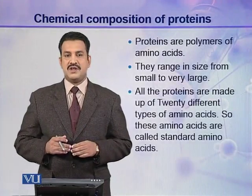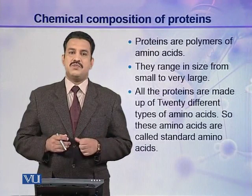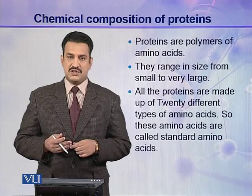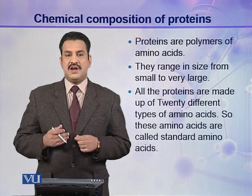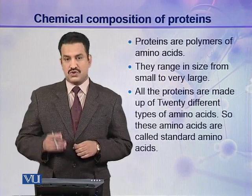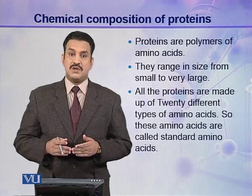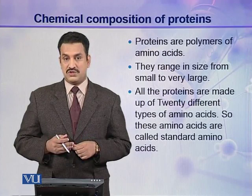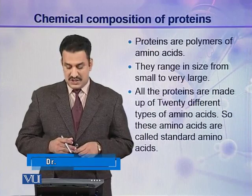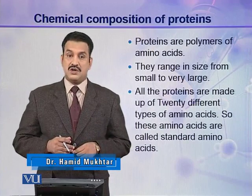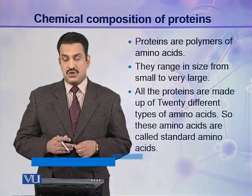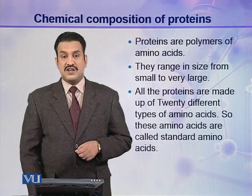Proteins, like DNA, are polymeric compounds made up of amino acids. In a protein molecule, amino acids are the repeating units — different amino acids join together to make protein molecules. Proteins range in size from small to very large; some may contain up to thousands of amino acids. All proteins are made up of 20 different amino acids, so these 20 amino acids are called standard amino acids.